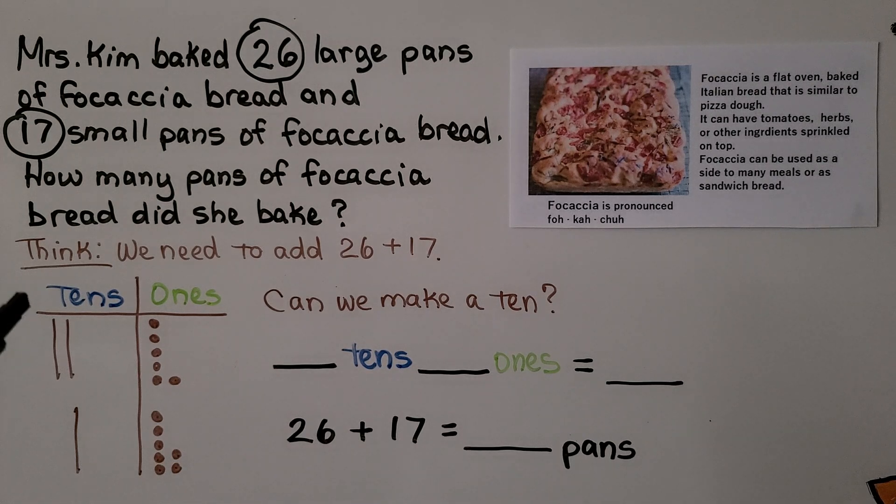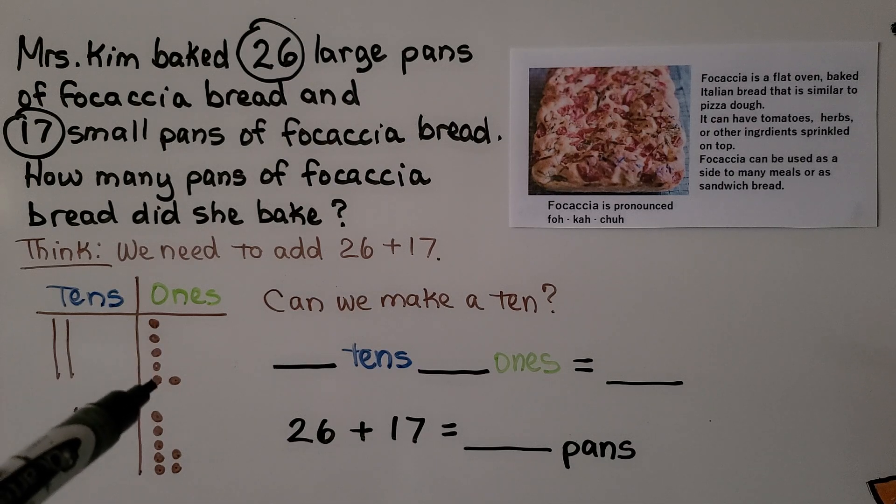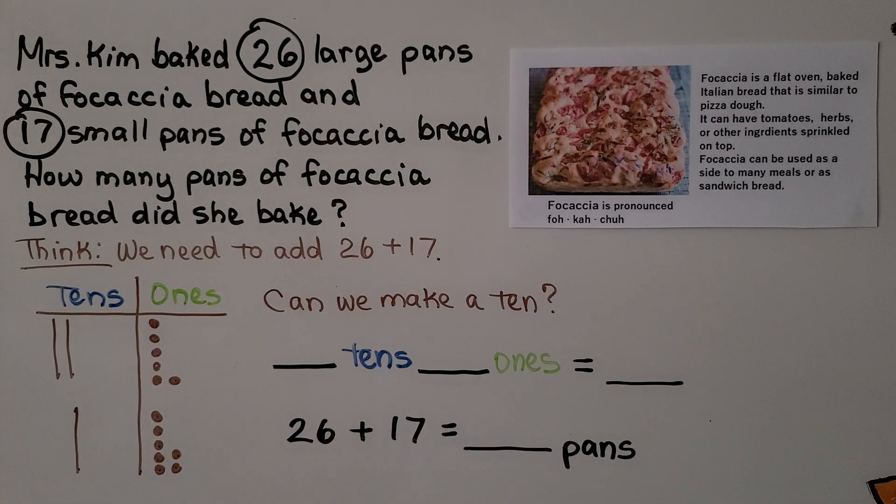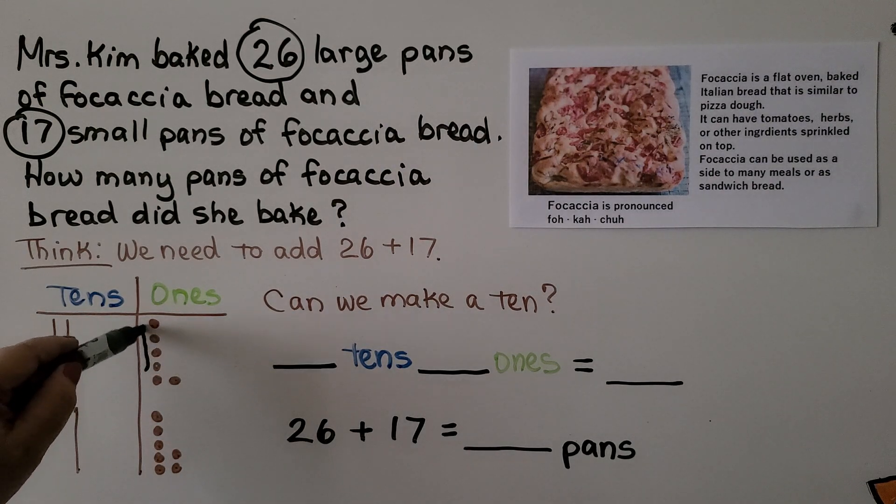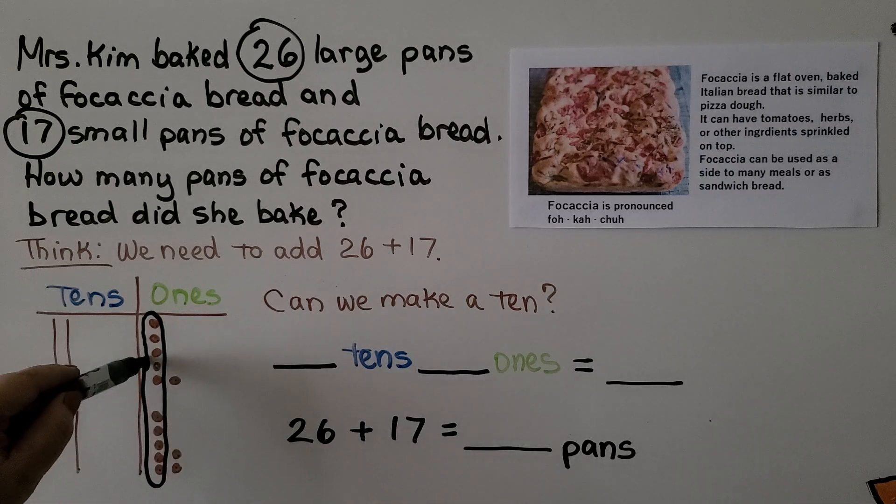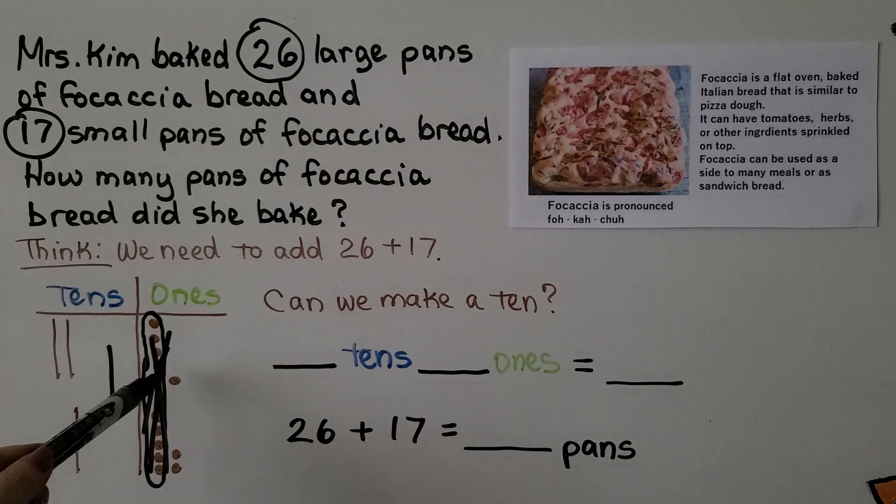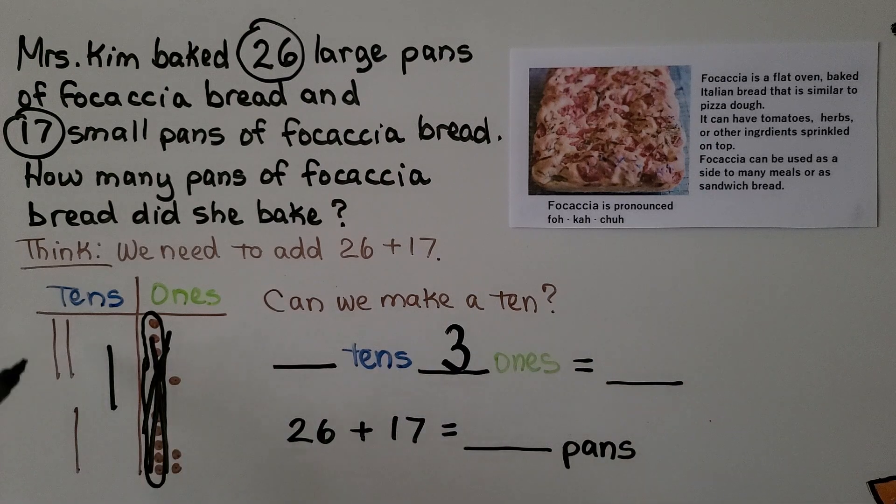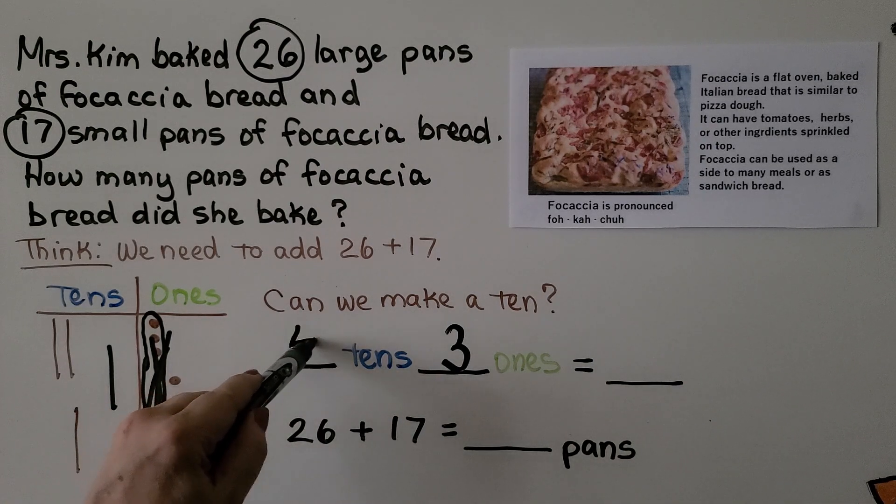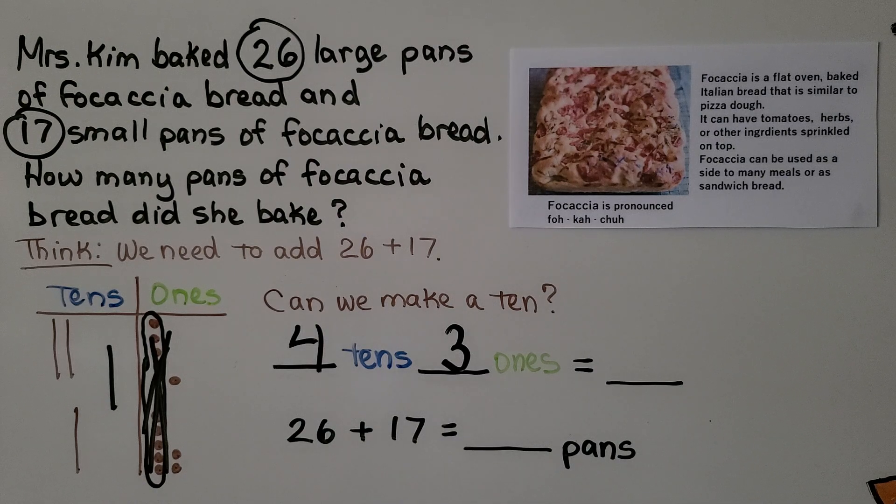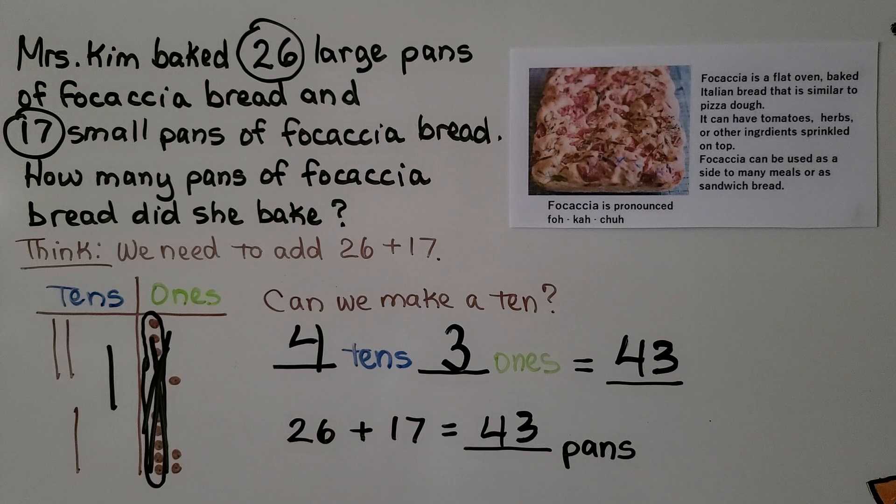We think we need to add 26 and 17. We can draw a quick picture. 26 is two tens, six ones. 17 is one ten, seven ones. We ask ourselves, can we make a ten from these ones? I see five and another five. That makes ten right there. We could take this five and this five and make a ten. We can put it over here and cross it off from the ones place. I see three little ones left over. And I see one, two, three, four tens. Four tens, three ones is equal to 43, which means 26 plus 17 is equal to 43. Mrs. Kim baked 43 pans of focaccia bread.